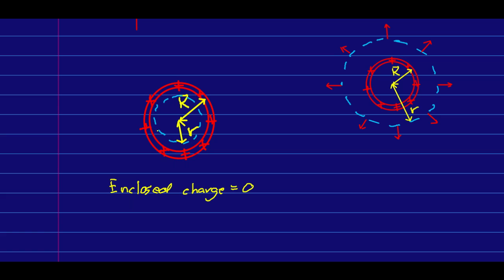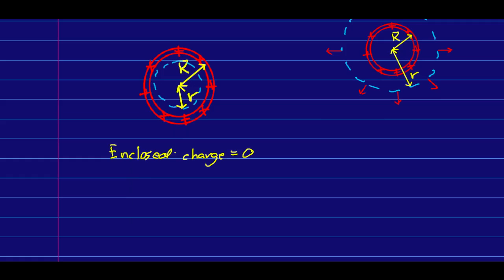And since the E field has to be the same everywhere on here, the only way we can have a total flux through this surface that equals zero, which is the enclosed charge, is if the E field here is zero.